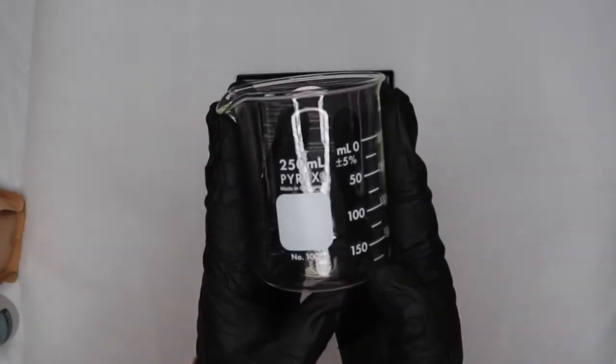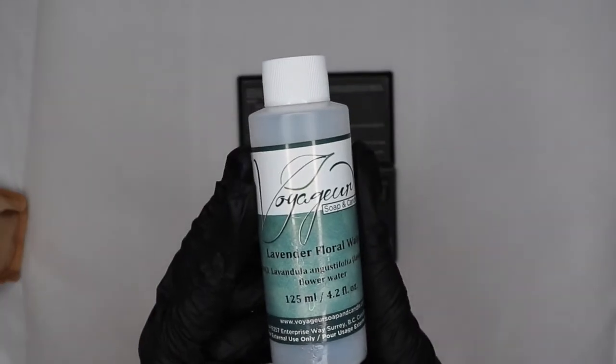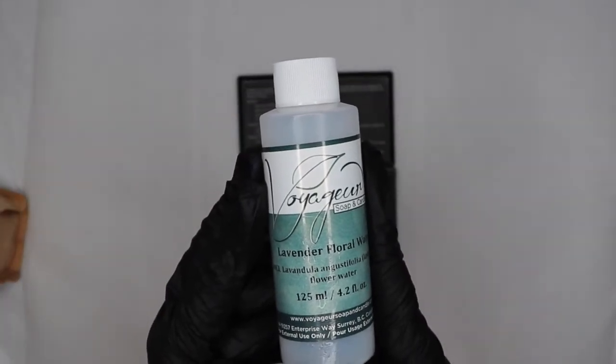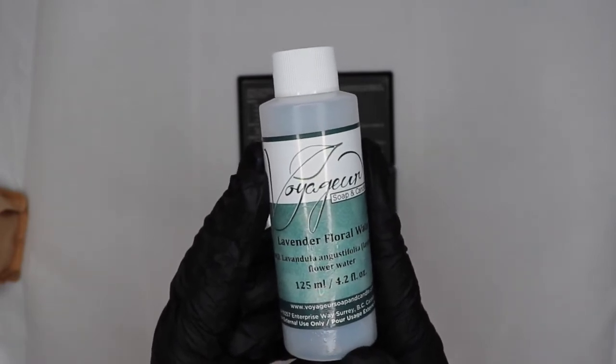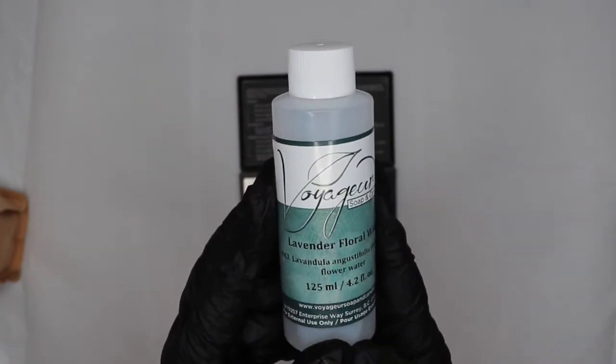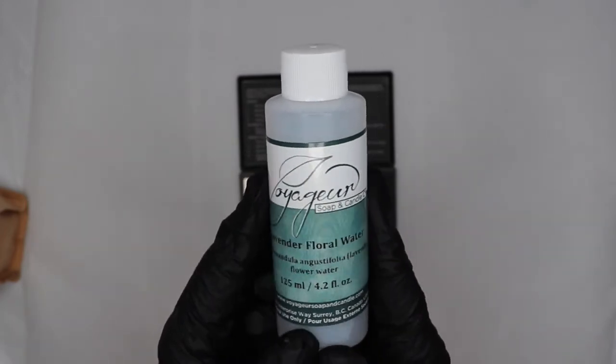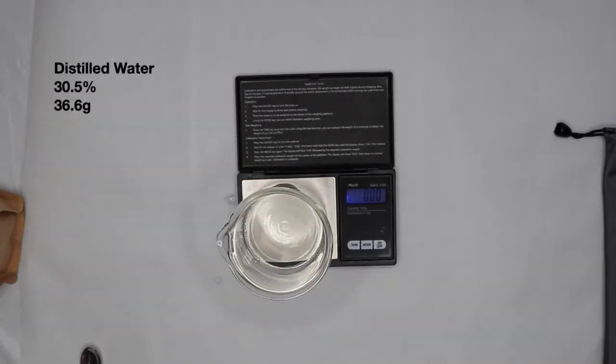I will be using a 250 milliliter beaker for my water phase. I will be adding lavender hydrosol to accentuate the lavender scent because I don't want to add more than 1% of essential oil. So in order to increase the scent, the lavender hydrosol will assist with that. 24 grams of lavender hydrosol, 36.6 grams of distilled water.